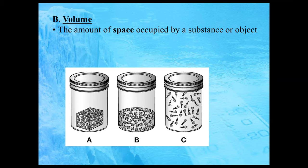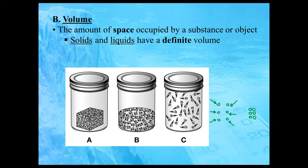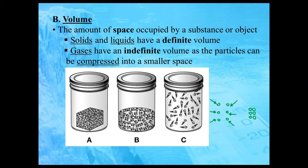Gases are where we can talk about volume being indefinite. We can take a gas and compress it — force it into a smaller area by applying pressure, so the particles are now occupying a smaller amount of space and are a lot closer together. That would be a compressed gas. Therefore, solids and liquids have a definite volume — they always occupy the same amount of space. Gases have an indefinite volume because it is possible to compress them into a smaller space.